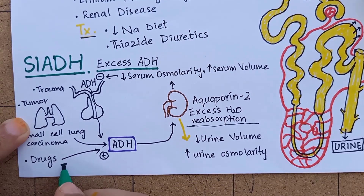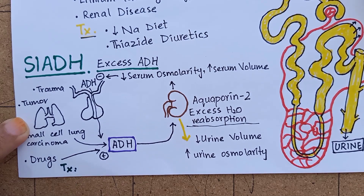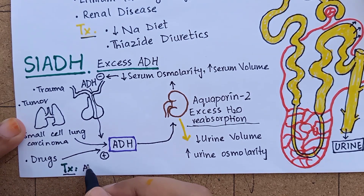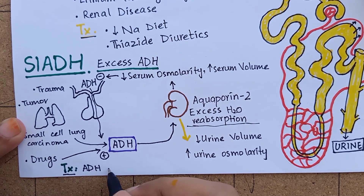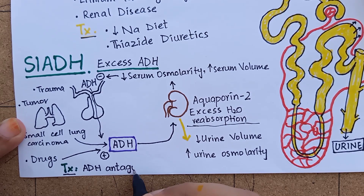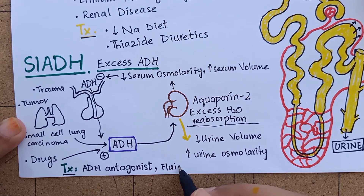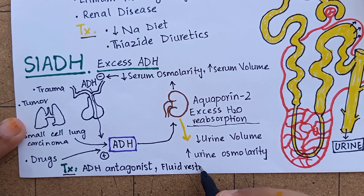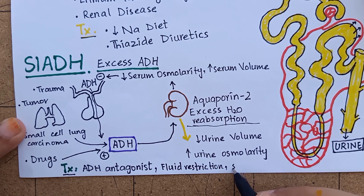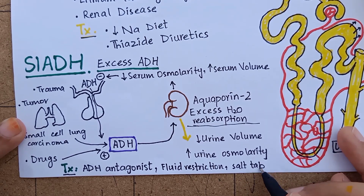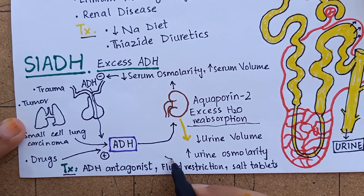The ultimate treatment for SIADH is the administration of ADH antagonists such as conivaptan, tolvaptan, and demeclocycline. The first line of treatment for SIADH is fluid restriction. You can also give salt tablets to compensate for hyponatremia caused by water retention.